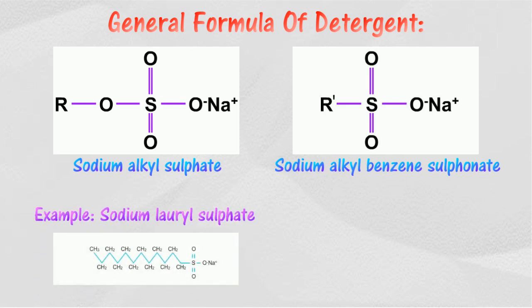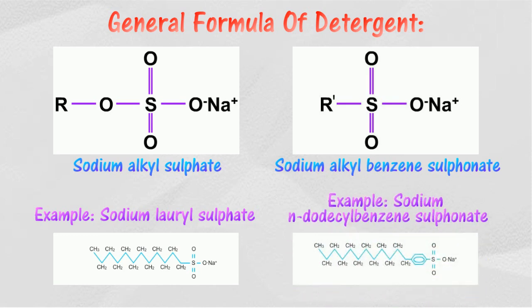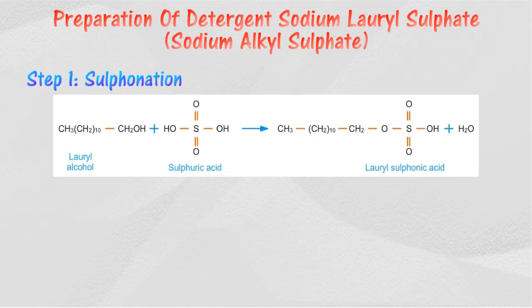An example of a sodium alkyl sulfate detergent is sodium lauryl sulfate. An example of a sodium alkyl benzene sulfonate detergent is sodium dodecylbenzene sulfonate. The manufacturing of sodium lauryl sulfate can be divided into two steps.